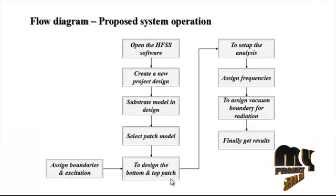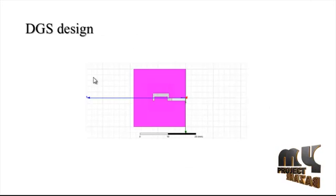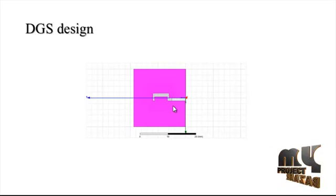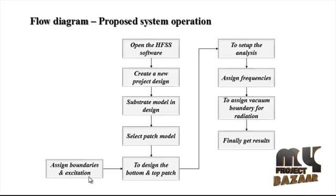Next, we design the bottom and top layers. The top model is the patch antenna and the bottom model is the DGS — defective ground structure. Then we set up boundaries and excitation. For boundaries, a perfect electric field is applied to both the top patch antenna and the bottom patch antenna.